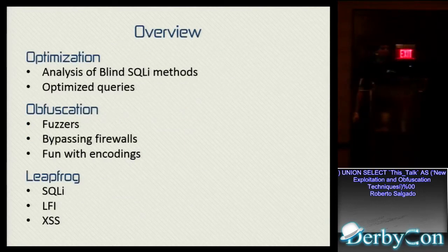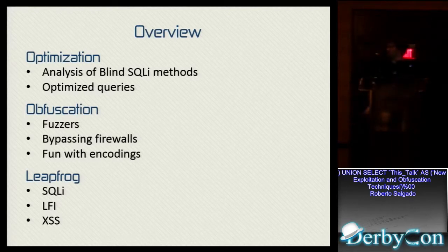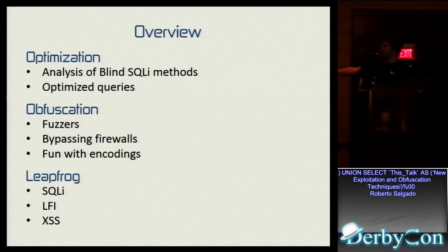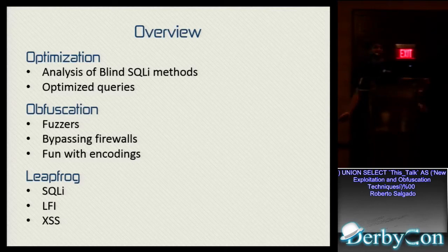We'll start by talking about some analysis of blind SQL methods that we can use to optimize blind SQL injections. Then I'll talk about some optimized queries — single queries you can use to do a lot in a database instead of having to send multiple queries and exhaust resources. Then in obfuscation, I'll be showing fuzzers and how we can use them to find different obfuscation methods, how we can apply them to bypassing firewalls, and some encodings that can also be used for bypassing firewalls. At the end I'll quickly mention my tool, LeapFrog, which helps you test the rules of firewalls and see how secure your firewall is.